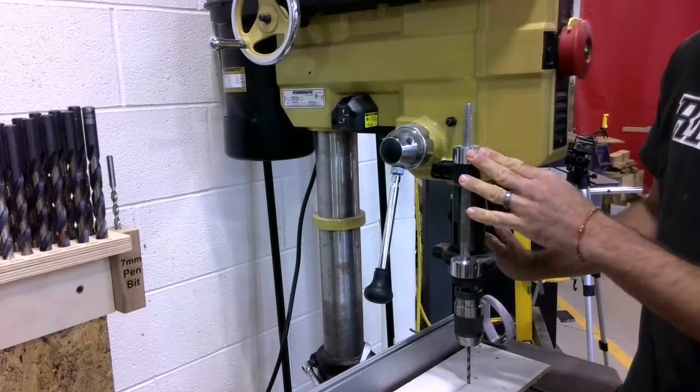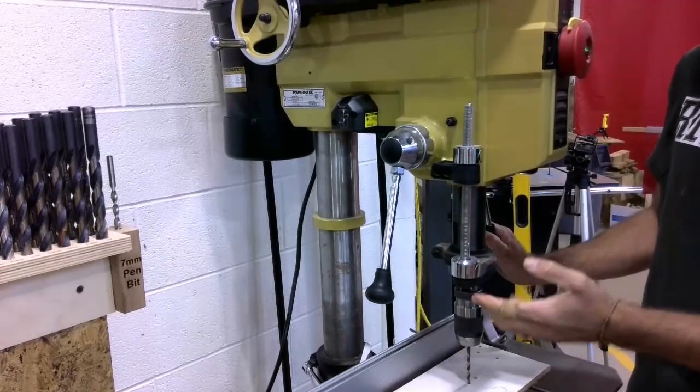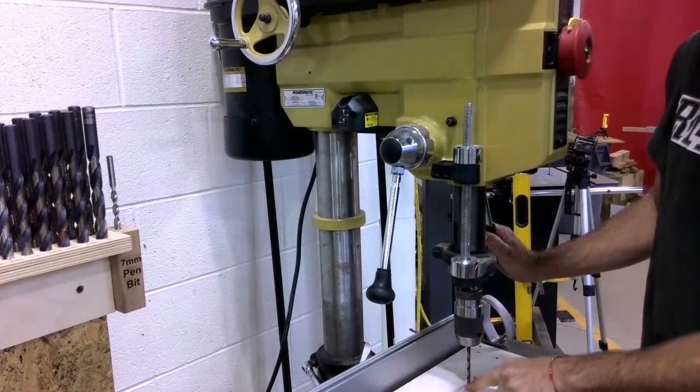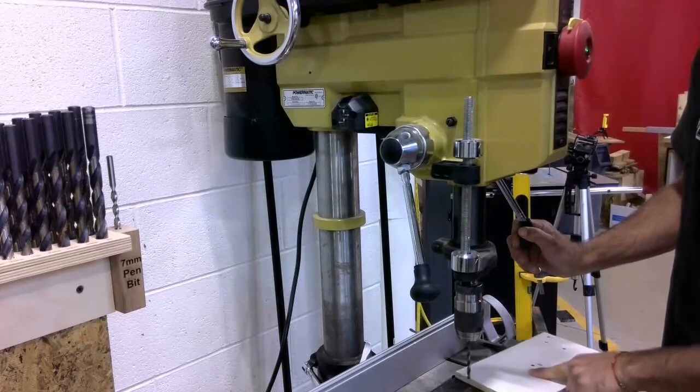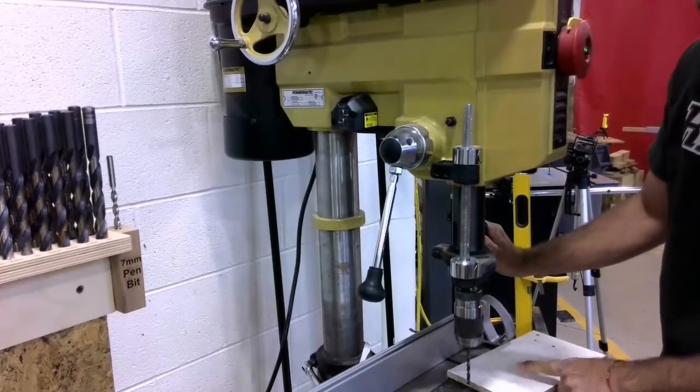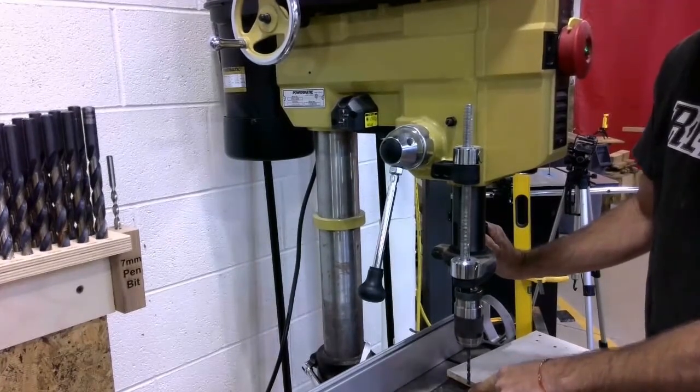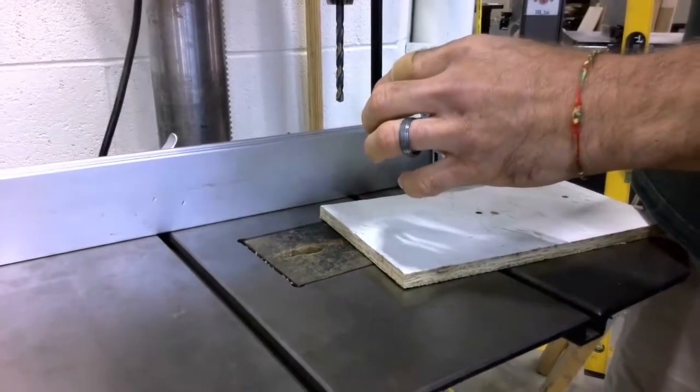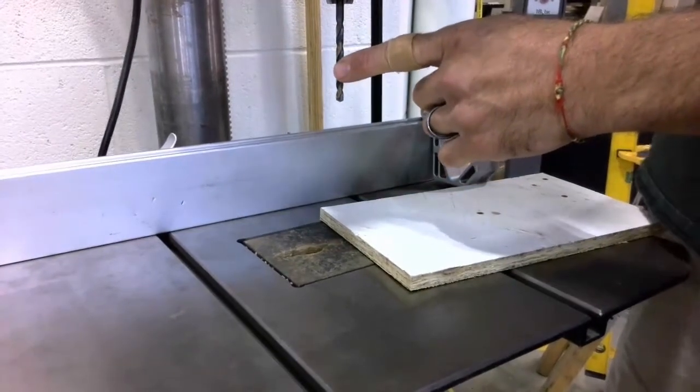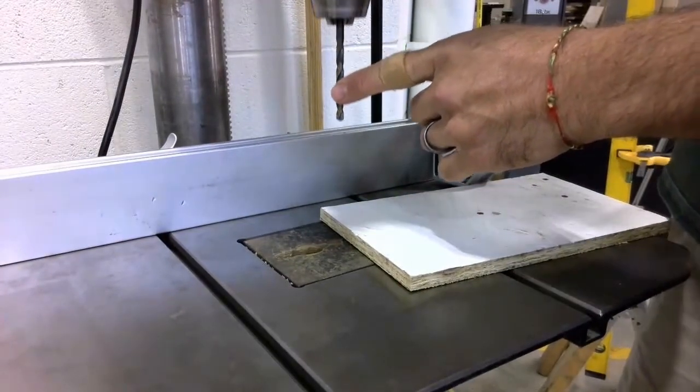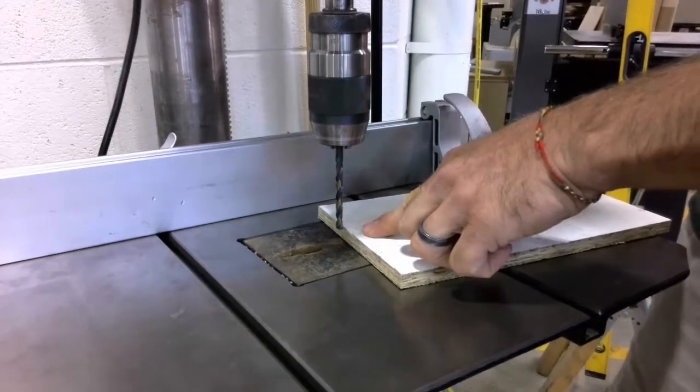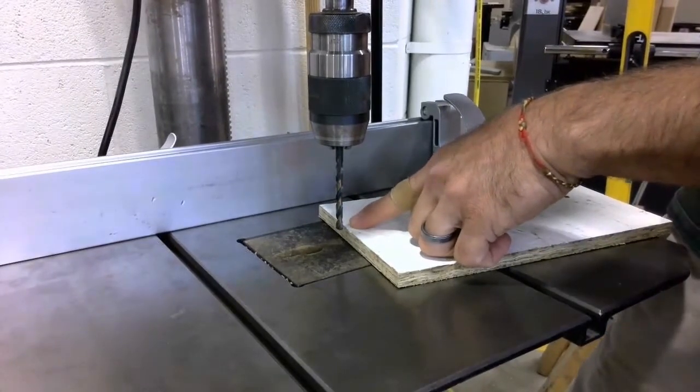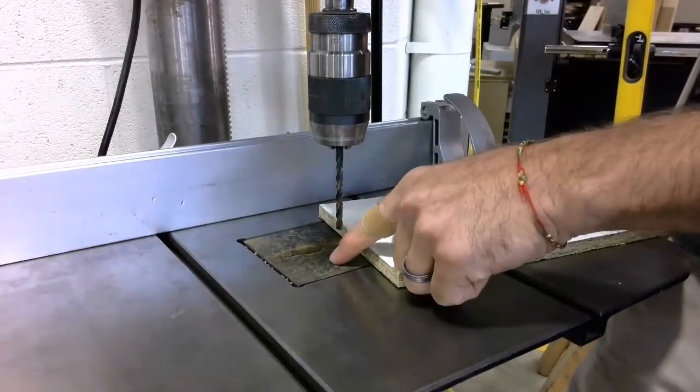Now the depth stop is set. What this does is it guarantees that I'm going to drill all the way through my workpiece into my backer material, but it also guarantees that I'm not going to drill down into the table top. You can see here, now that I have taken the time to adjust the depth stop, that when I lower the spindle on the drill press, it stops right here, just below the surface of my backer material, but above the table.